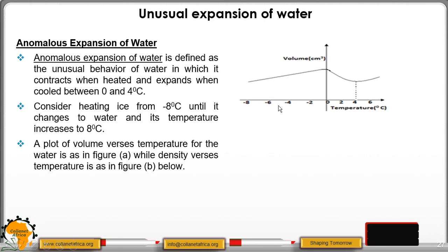So we look at the first graph. We are heating from negative 8 to positive 8. As you can see, from negative 8 to 0 degrees there is expansion. That one, we have normal expansion of water. There is increase in size and volume.